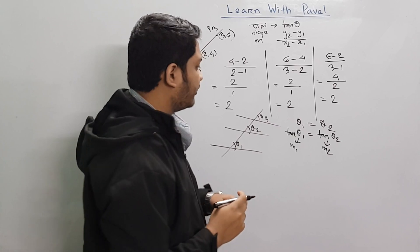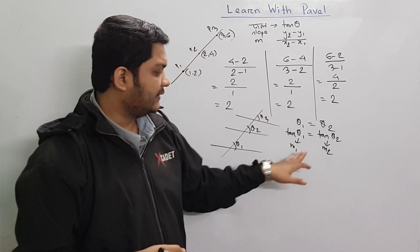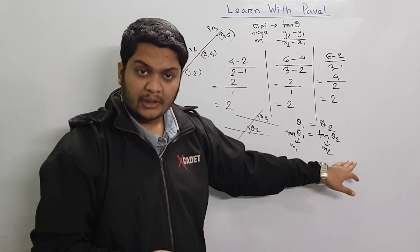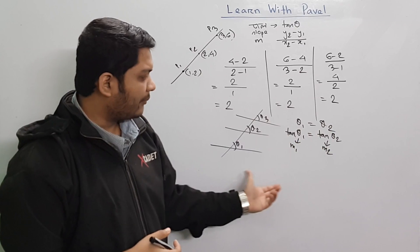This is m equal to m2. So this is m equal to m2 equal to m3. It is very easy to do that.